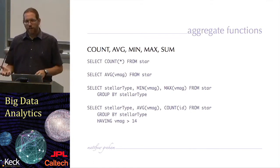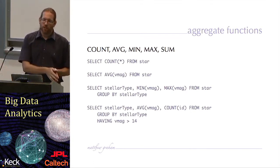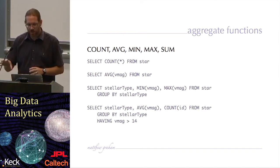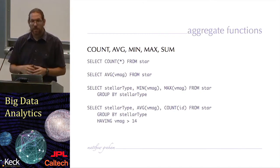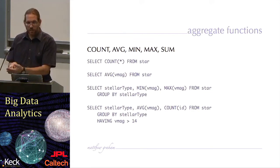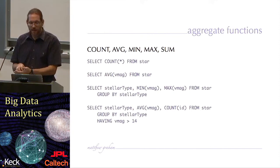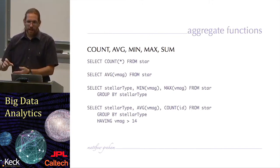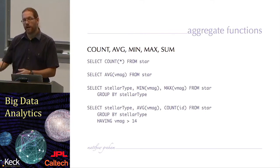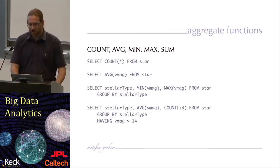If I'm using aggregate functions, then instead of using the where clause, I might use the having clause, which applies to aggregated data. This last example will return the stellar types, the average magnitude for each stellar grouping, and also how many are in each of those groupings, where each grouping is constrained to have objects where the V magnitude parameter is greater than 14.